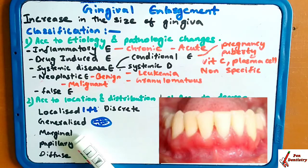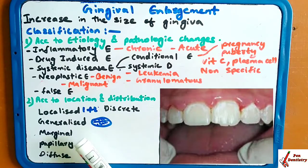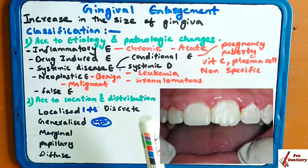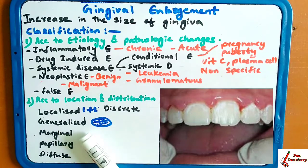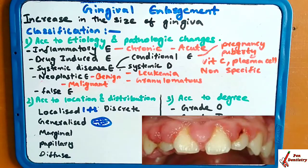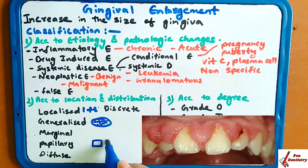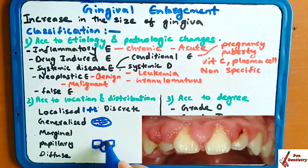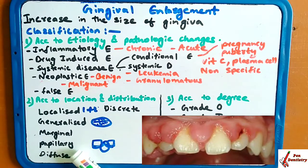The third type is marginal, where gingival enlargement is limited to the margin level of the gingiva. The fourth is papillary, which is confined to the interdental papilla — the tissue between two teeth — only those areas get enlarged, so papillary enlargement.